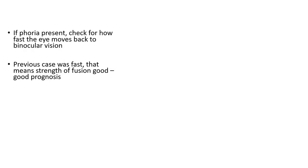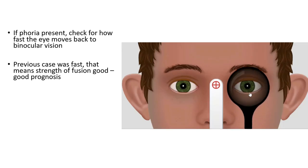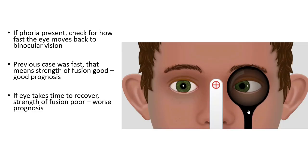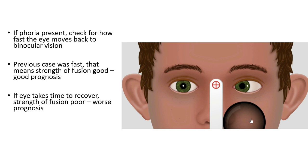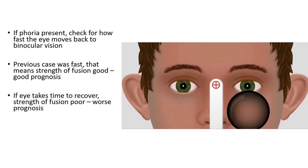Something else that can be assessed with the uncover test is how fast the eye that was under cover comes back to its original fixation position, giving us an idea about the quality of fusion. If the eye returns immediately to fixation, the fusion was good — a good prognosis. If the eye takes several seconds to come back into fixation position, this indicates the strength of fusion is not so good, which has a poorer prognosis.